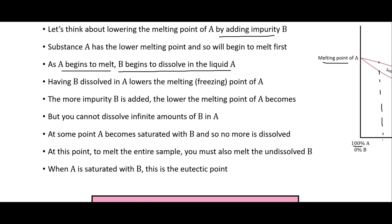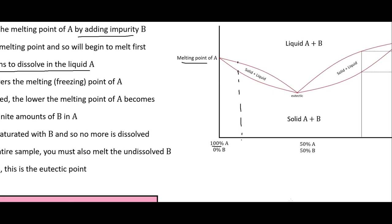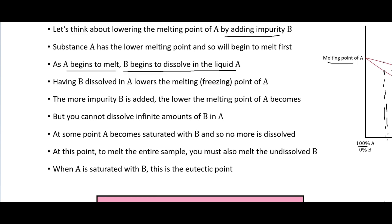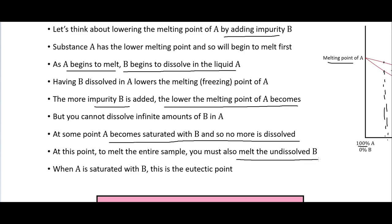The more impurity B that is added, the lower the melting point of A becomes. If only a small amount of B is added, all of B can dissolve into A. The eutectic point is when A becomes saturated with B — then you have solid B that can't dissolve and you must start melting that solid B too. You cannot dissolve an infinite amount of B in A; at some point A is saturated and to melt the entire sample you must also melt the undissolved B.